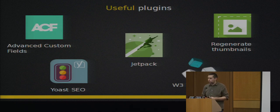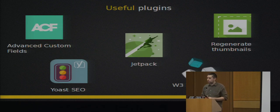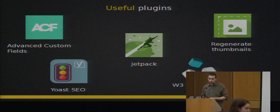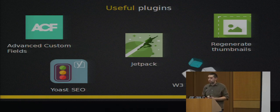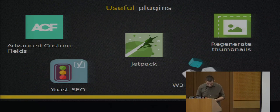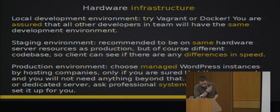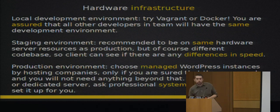Regenerate Thumbnails is useful when you add new image sizes. Yoast SEO handles basic SEO optimization for sites. And W3 Total Cache, or any other caching plugin, is great for caching pages, assets, et cetera.